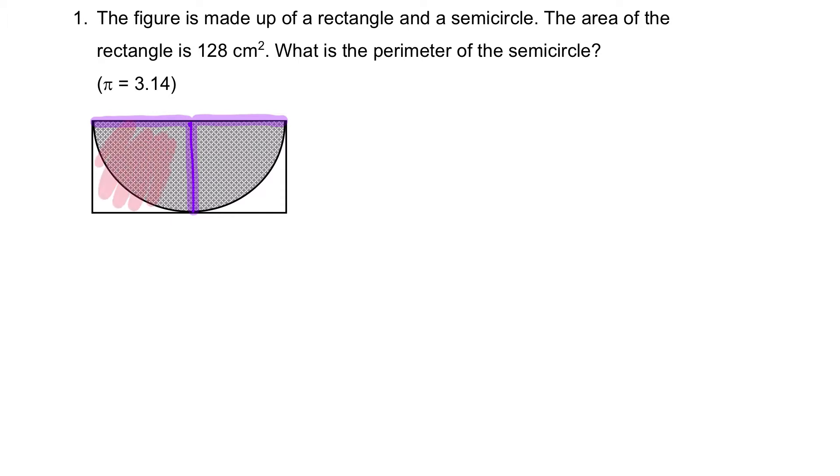Hence, this entire area will just be 128 square centimeter divided by 2, which is 64. So let me write it down. Area of half the rectangle, which is the square, will be 128 square centimeter divided by 2, and that will be 64 square centimeter.